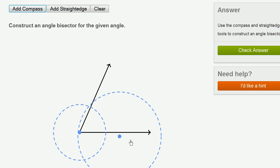So let's add our compass. And so what I want to do, this circle is centered at this point and it has a radius equal to the distance between this point and that point. And then I do that again. So this circle is centered at this point and it has a radius equal to the distance between that point and that point.